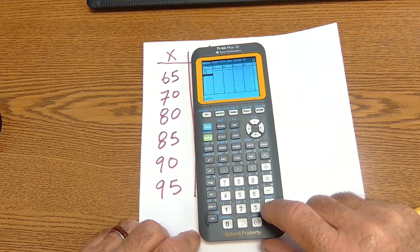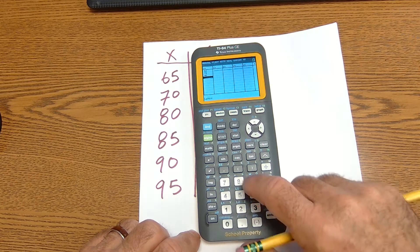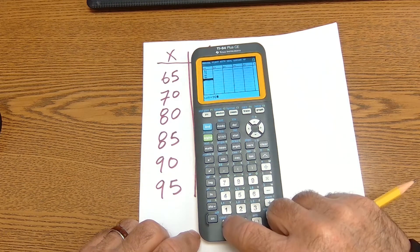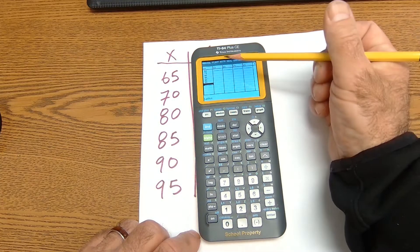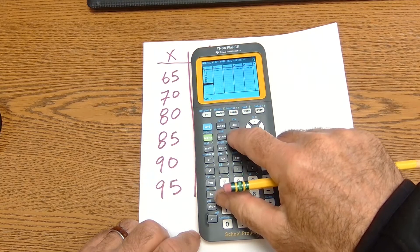65, 70, 80, 85, 90, 95. So my list is all entered under list one.